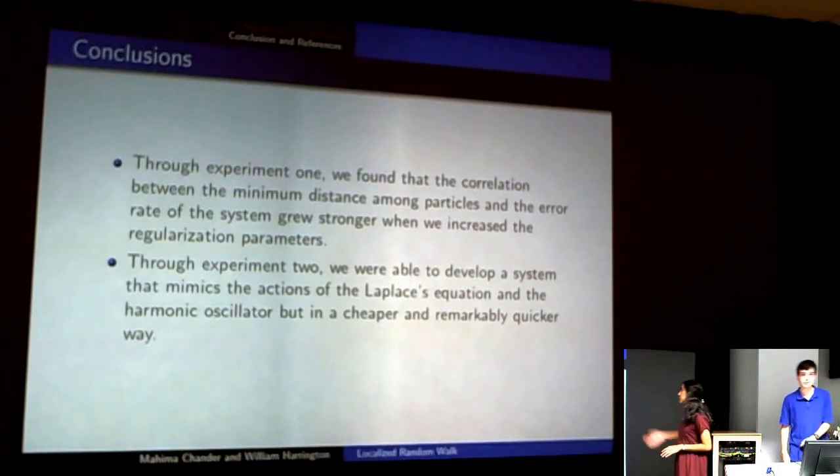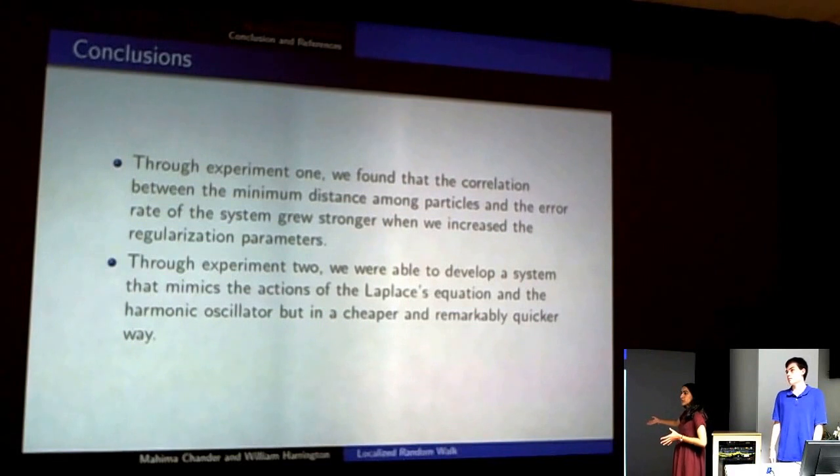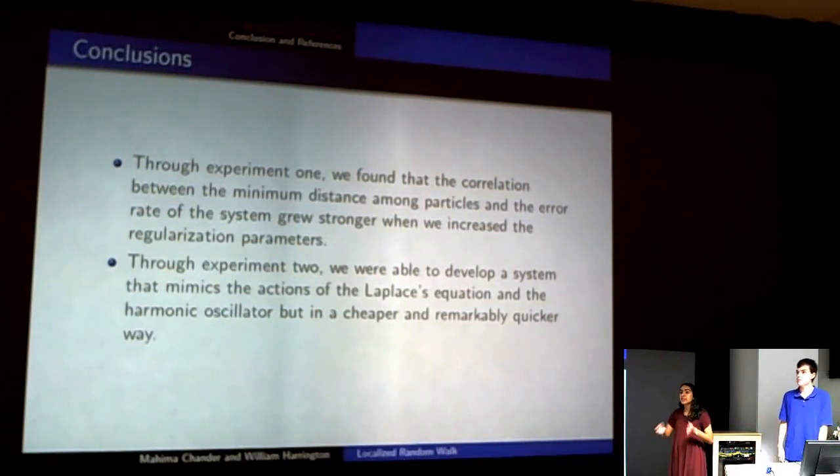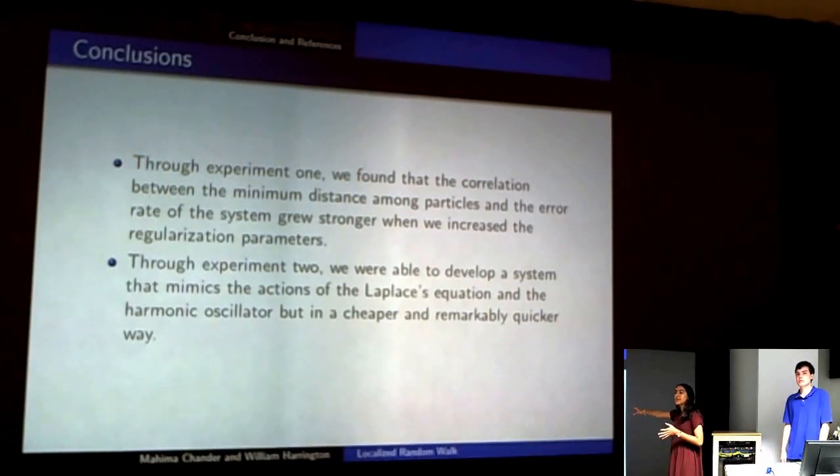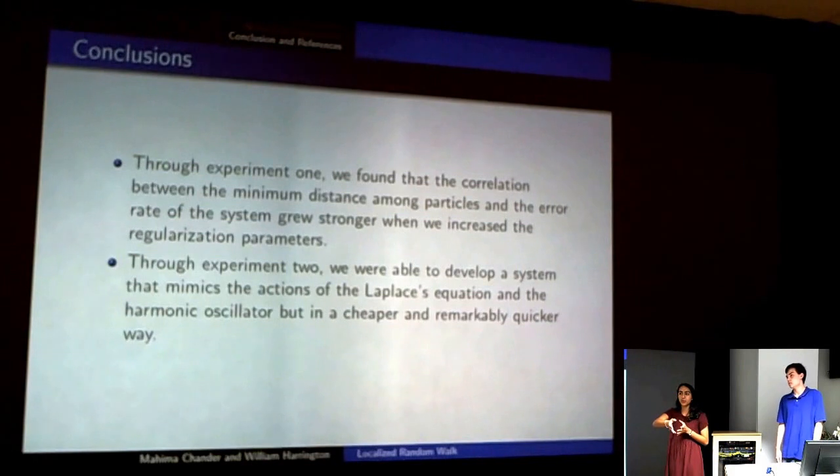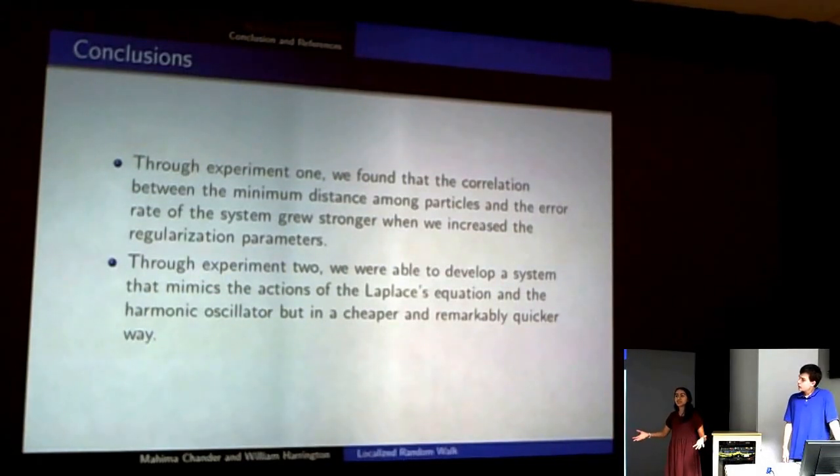In conclusion, through our first experiment, we found a correlation between the minimum distance among particles and the error rate of the system, and it grew stronger as we increased regularization parameters. That was important because it confirmed that our system was working properly and mimicking the original harmonic oscillator properly, since in reality particles are supposed to come infinitely closer. Secondly, with our second experiment, we were able to develop a system that mimicked the actions of Laplace's equation in a cheaper and remarkably quicker way. That's useful because we can reduce the amount of time we have to wait for simulations to run while still gaining accurate results.